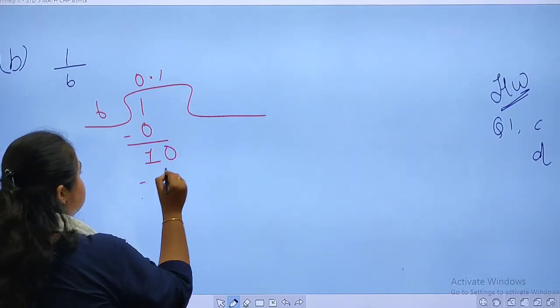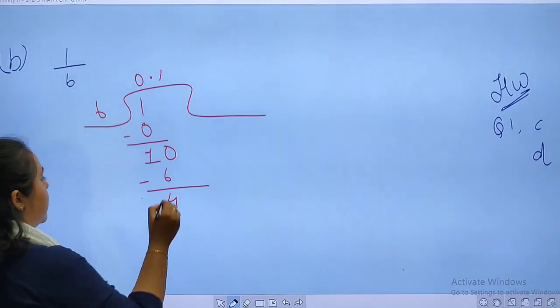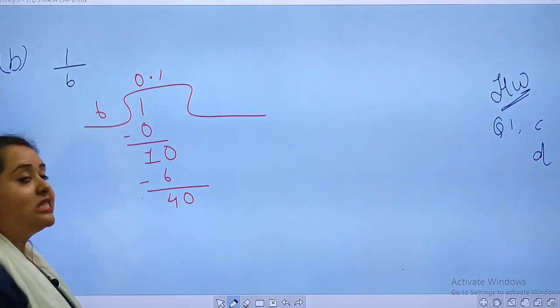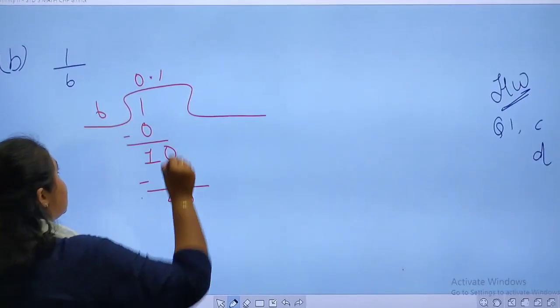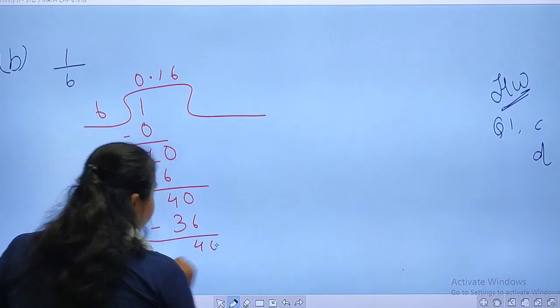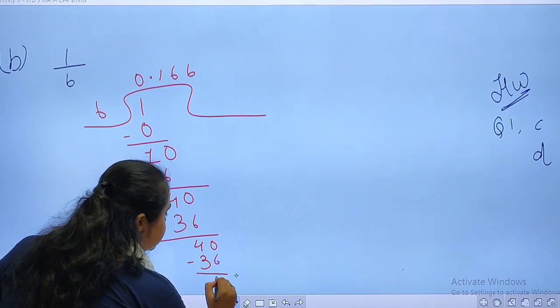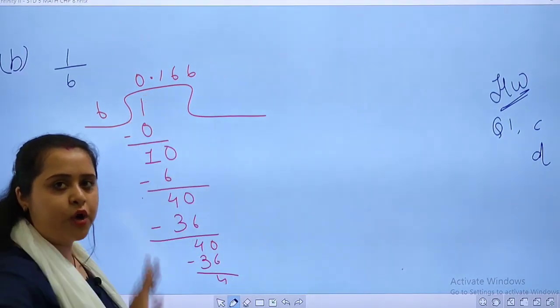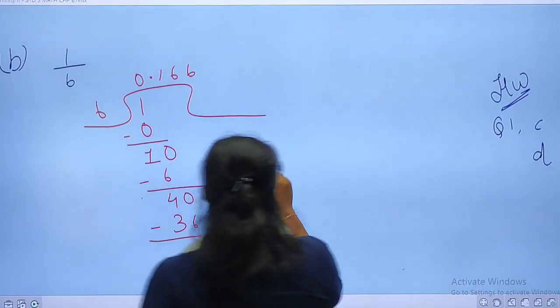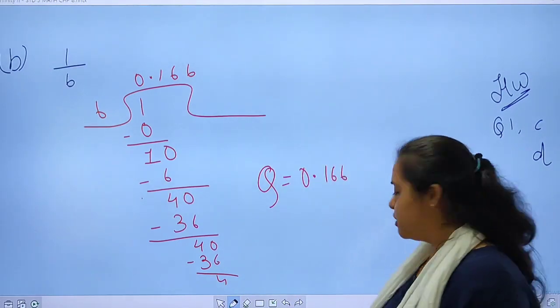6, 1, 6 times 36. Again, 4. Again, 0. 6, 6 times 36. This will be a going on process. So your answer for this will be 0.166.